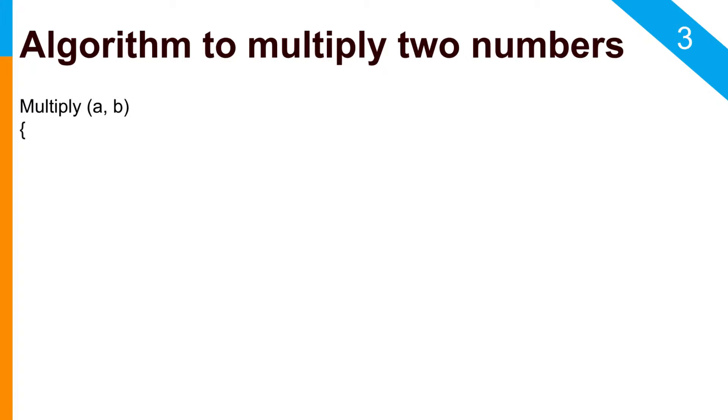You would simply start your algorithm maybe by a begin statement or maybe use a bracket or parenthesis and then simply define your task or computation. In this case, we are first multiplying A with B and then assigning that multiplication result to a variable called C. Then you can finally close your statement with a parenthesis or end statement.